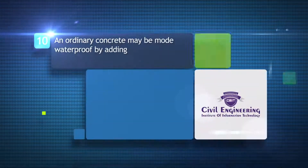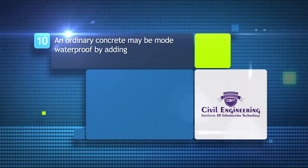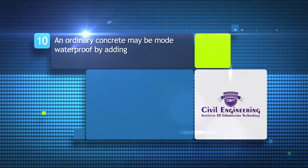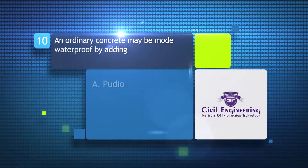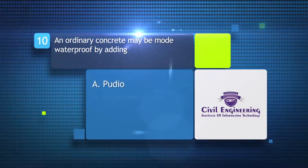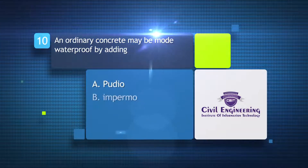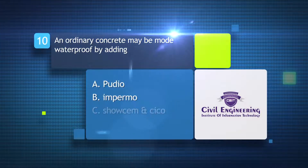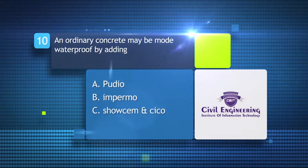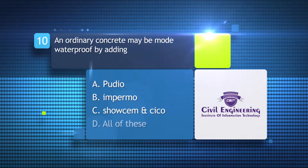An ordinary concrete may be made waterproof by adding: A) pozzolana, B) imprimo, C) sodium silicate, D) all of these.